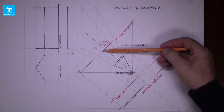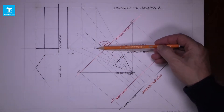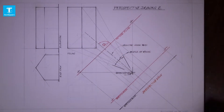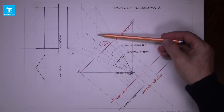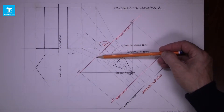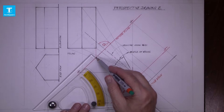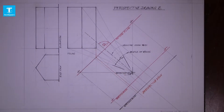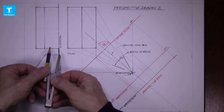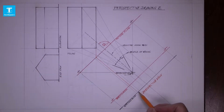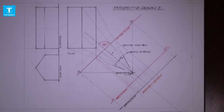In this case the picture plane does not go through the corner of the building — there is a space between the two. So to get the height of the building we have to continue the lines on to the picture plane and draw them down. Set the compass to the height of the building, up to the gutter, and from this point mark the height.